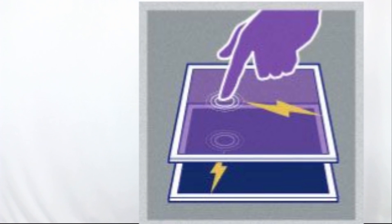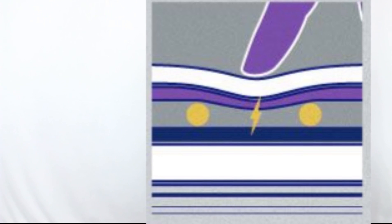Typically, a voltage travels across each sheet. One voltage detects the horizontal location of the touch. The other detects the vertical orientation of the point of contact. When you apply pressure to the top sheet of a resistive display, it flexes back towards the second sheet. When they come into contact with each other, a circuit is complete.